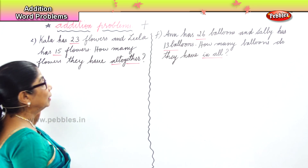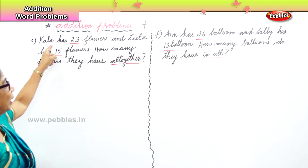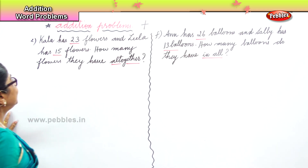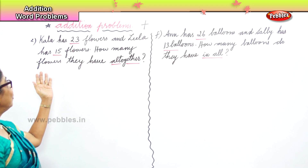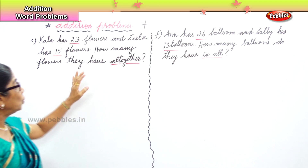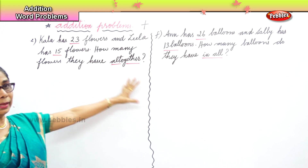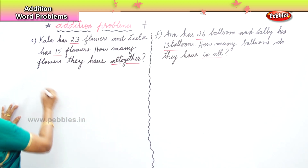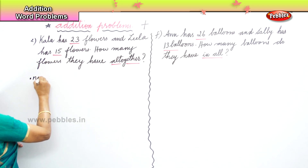Now we come to the statement. For the first problem, we write: number of flowers Kala has, then number of flowers Leela has, and then the total number of flowers altogether.